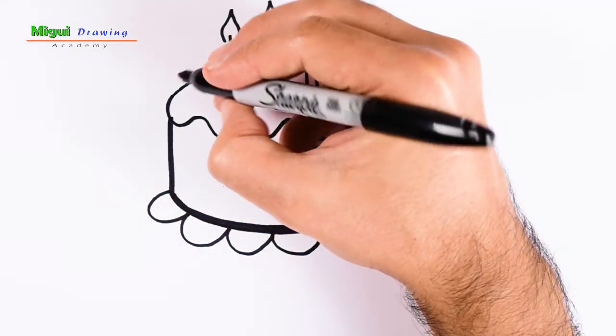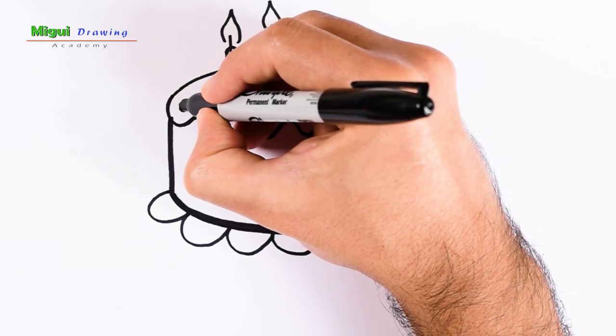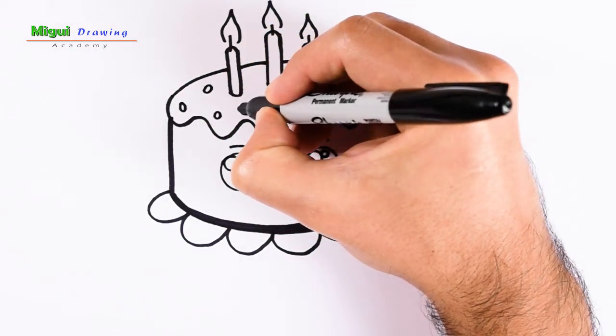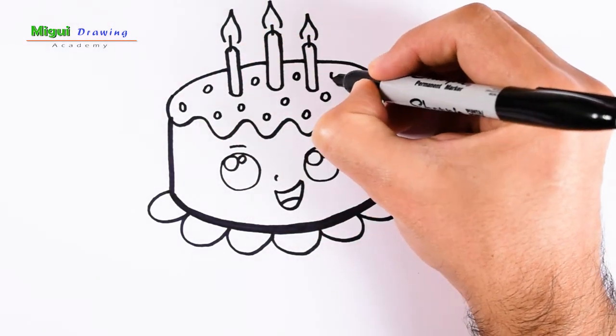You can add some small circles across all the surface so you can add some more extra colors.